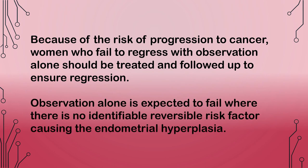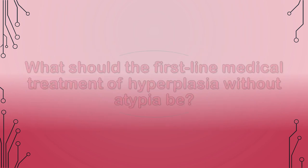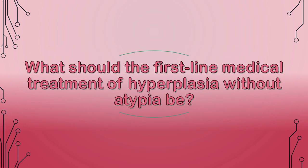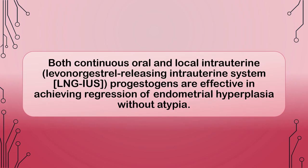Observation alone is expected to fail where there is no identifiable reversible risk factor causing the endometrial hyperplasia. What should the first-line medical treatment of hyperplasia without atypia be? Both continuous oral and local intrauterine progestogens — including the levonorgestrel-releasing intrauterine system (LNG-IUS) — are effective in achieving regression of endometrial hyperplasia without atypia.